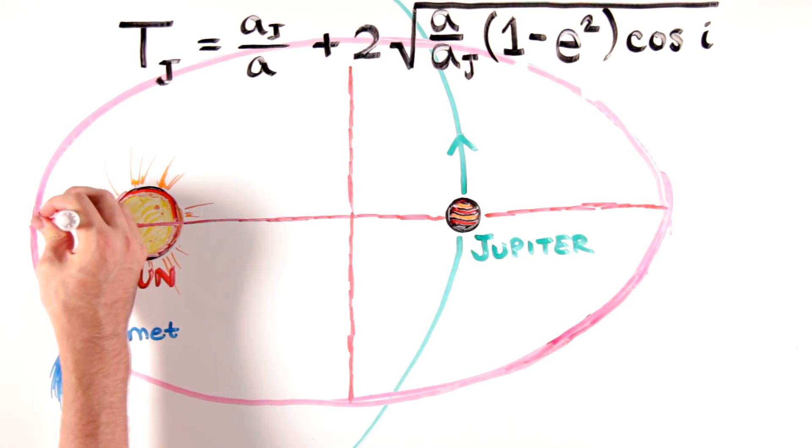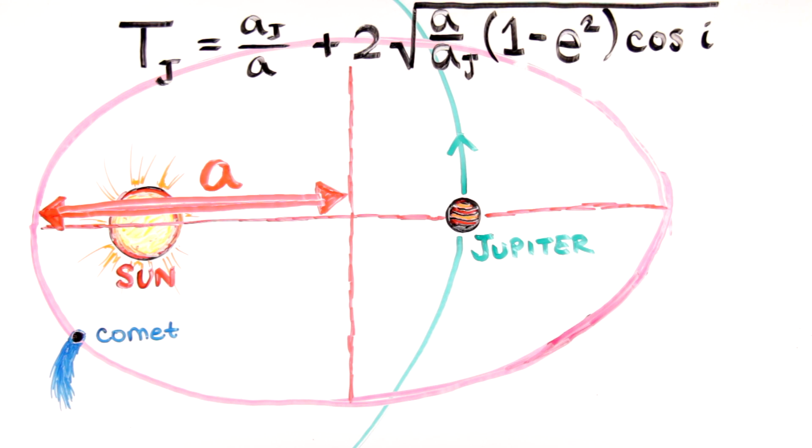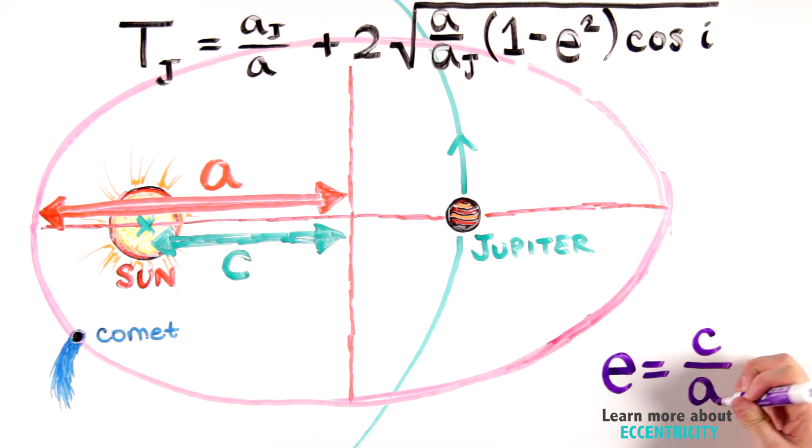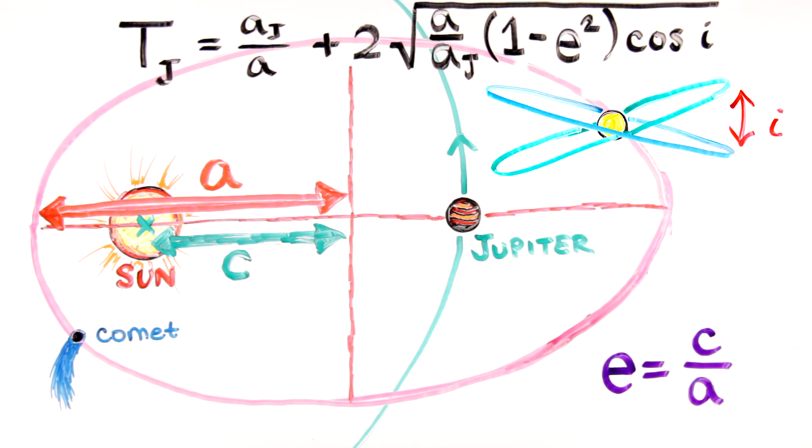Observers find the semi-major axis of an ellipse, which traces or describes a comet's orbit. They calculate the eccentricity, how different it is from a perfect circle, and observe its inclination from the plane of the solar system.